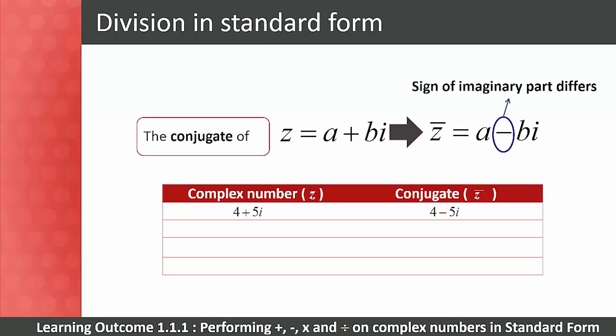Here are some examples of conjugates: 4 + 5i becomes 4 − 5i; −2 − 2i becomes −2 + 2i; √2 + i becomes √2 − i; and 4i − 7 becomes −4i − 7.